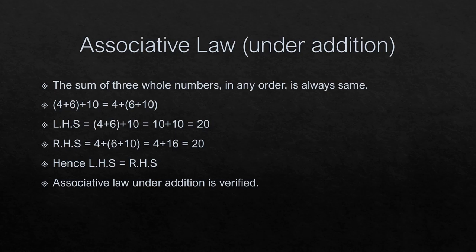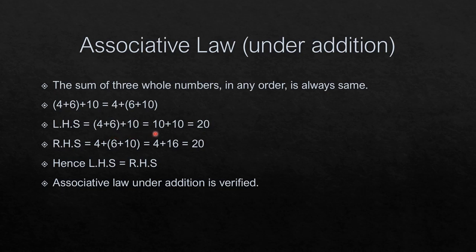Associative law under addition: in this law we are taking three whole numbers. The sum of three whole numbers in any order is always the same. Taking 4, 6 and 10: (4 plus 6) plus 10 equals 4 plus (6 plus 10). Left hand side — bracket 4 plus 6 gives 10, then 10 plus 10 is 20. Right hand side — bracket 6 plus 10 gives 16, then 4 plus 16 is 20. Hence left hand side equals right hand side. Associative law under addition is verified.